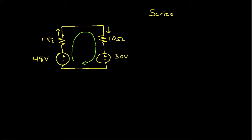What we would like to do is find out what the current is that flows around this loop. So our goal is to solve for I. It turns out that once we know the current that flows through the loop, then we can easily find the voltages across the two resistors as well.